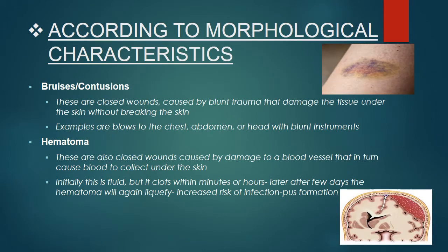According to morphological characteristics: bruises or contusions are closed wounds caused by blunt trauma that damage tissue under the skin without breaking the skin. Examples are blows to the chest, abdomen, or head with blunt instruments or hard objects. Hematoma are also closed wounds caused by damage to a blood vessel, causing blood to collect under the skin. Initially this is fluid, but it clots within minutes or hours; after a few days, the hematoma will again liquefy. Increased risk of infection or pus formation is possible.